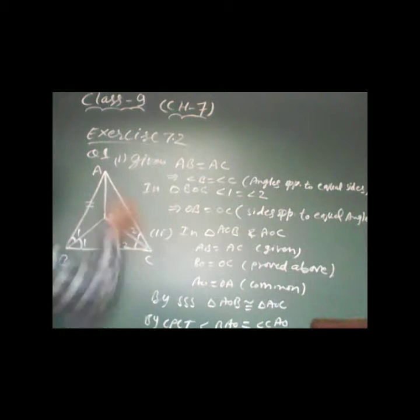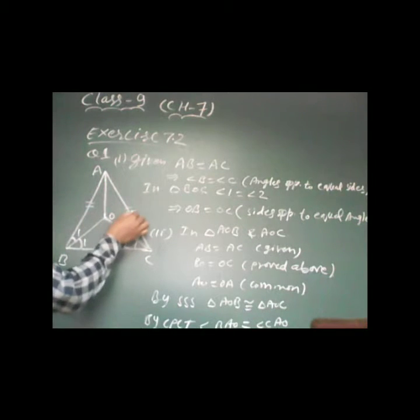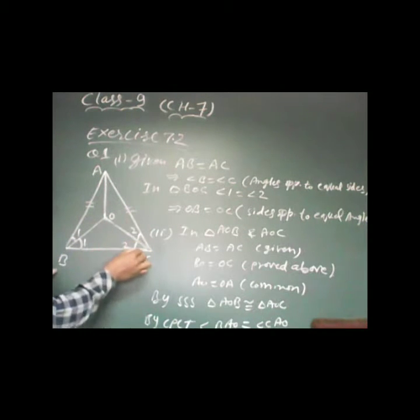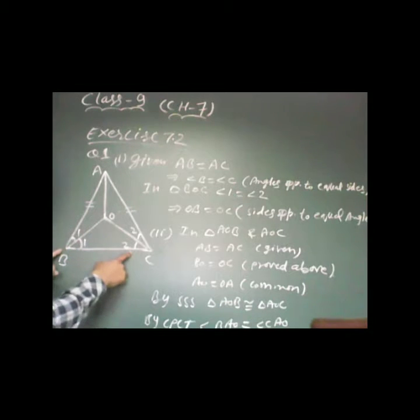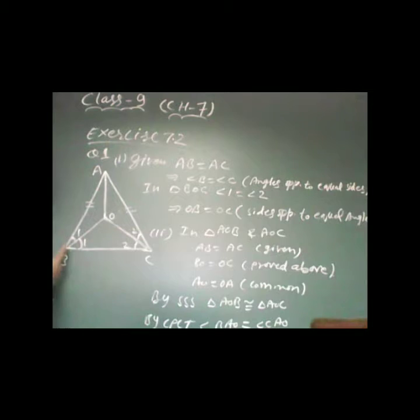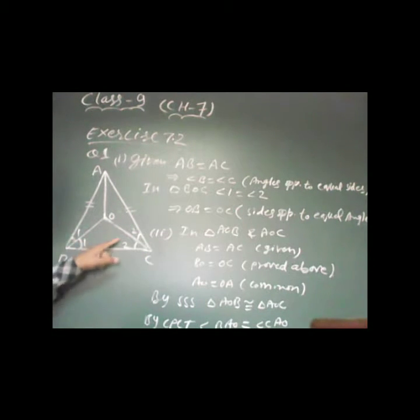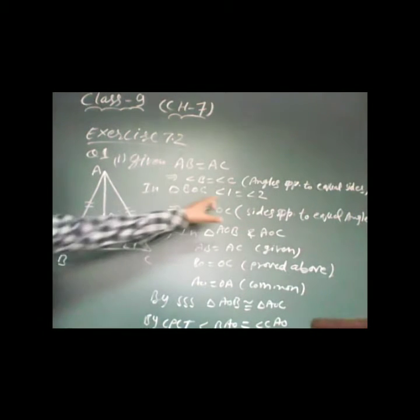In triangle ABC, AB is equal to AC, which means angle B is equal to angle C. Why? Because angles opposite to equal sides are also equal. Now if angle B is equal to angle C, we label the bisected halves as angle 1 and angle 2, since BO is the bisector. So we can say half of angle B is equal to half of angle C.